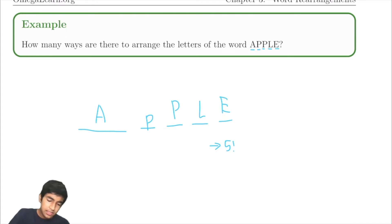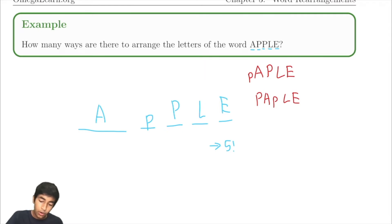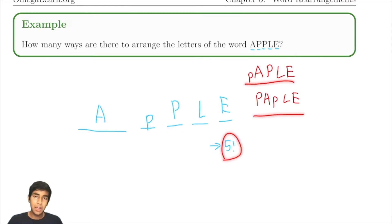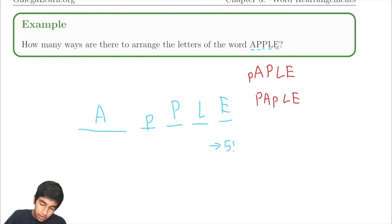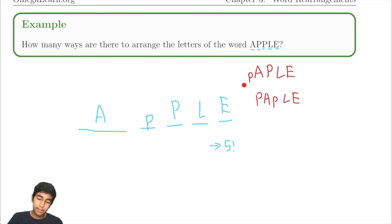But let's look at two permutations: P, A, P, L, E versus P, A, P, L, E. In our five factorial count, we're counting these as different arrangements. But the first letter is P and the third letter is P in both cases — these arrangements are the same.